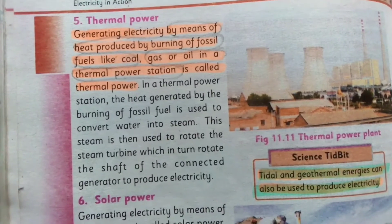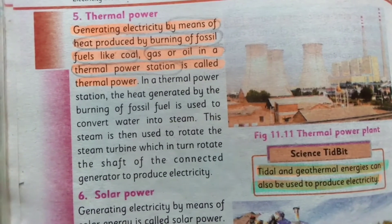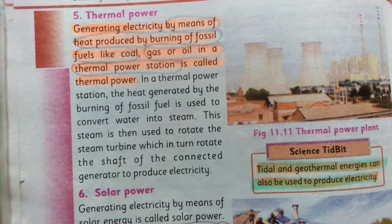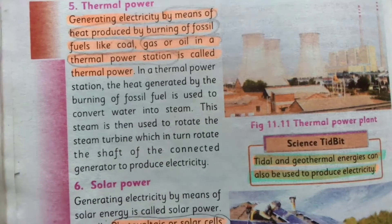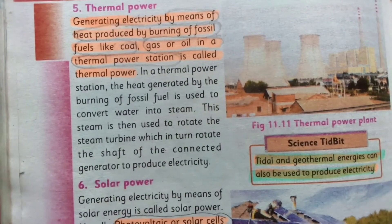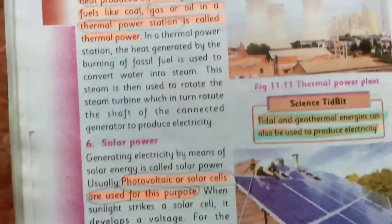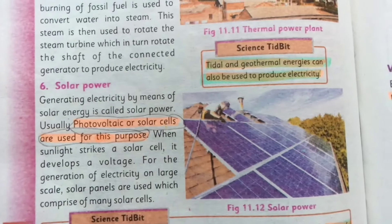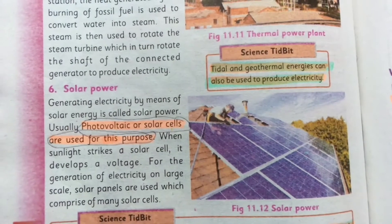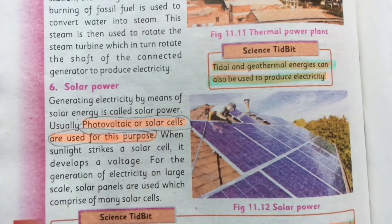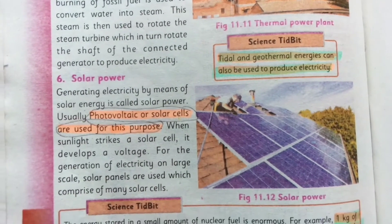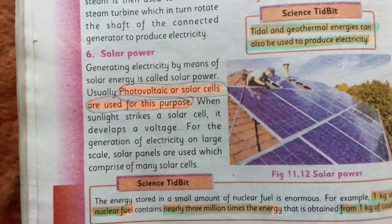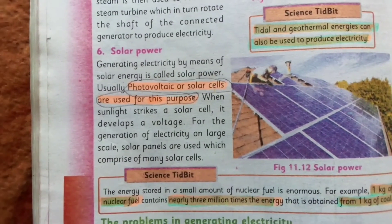Thermal power is generating electricity by means of heat produced by burning fossil fuels like coal, gas, or oil in a thermal power station. Tidal and geothermal energies can also be used to produce electricity. Photovoltaic or solar cells are used for solar power generation.